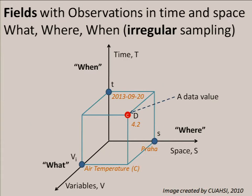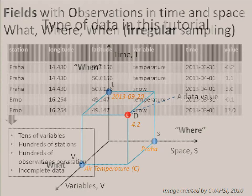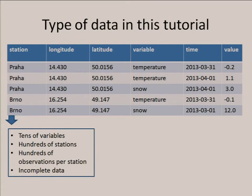In this presentation we will be dealing with data that are fields, which have dimension in space and also in time. For the observations we can ask the question: what, where, and when. Our values may be regular but also irregular with a lot of missing data points. Here in this slide is an example of the data. You can see the columns are station, then longitude and latitude coordinates, then the variable — we can see here two different variables: temperature and snow — then the time when it was observed and also the value.